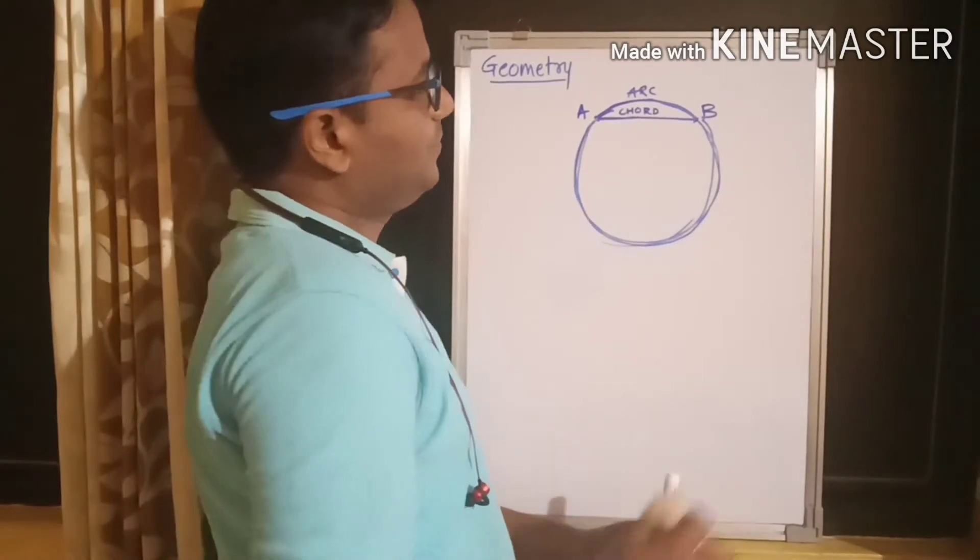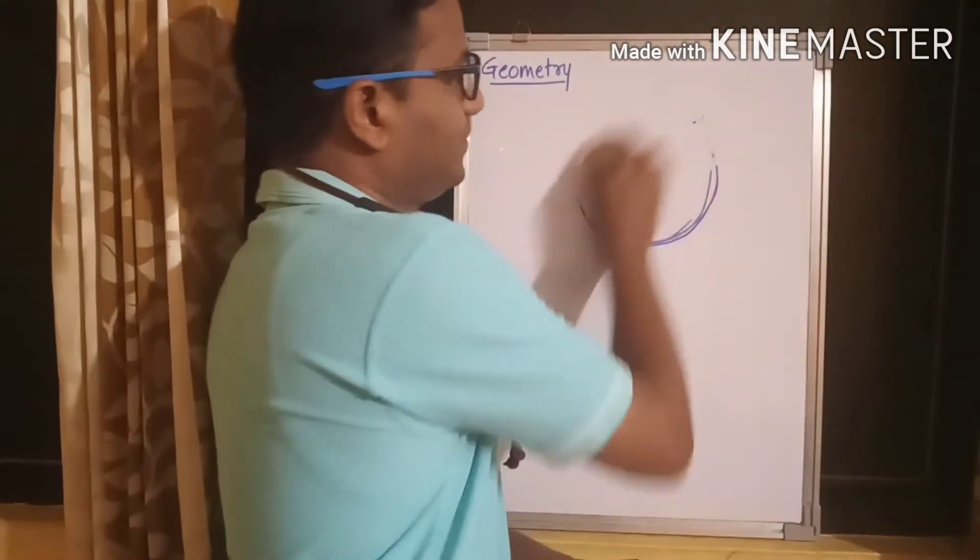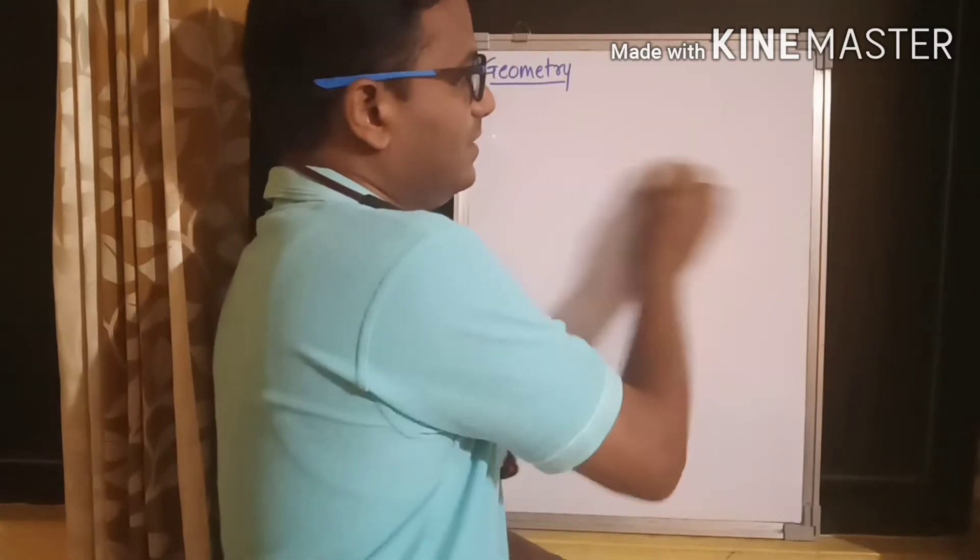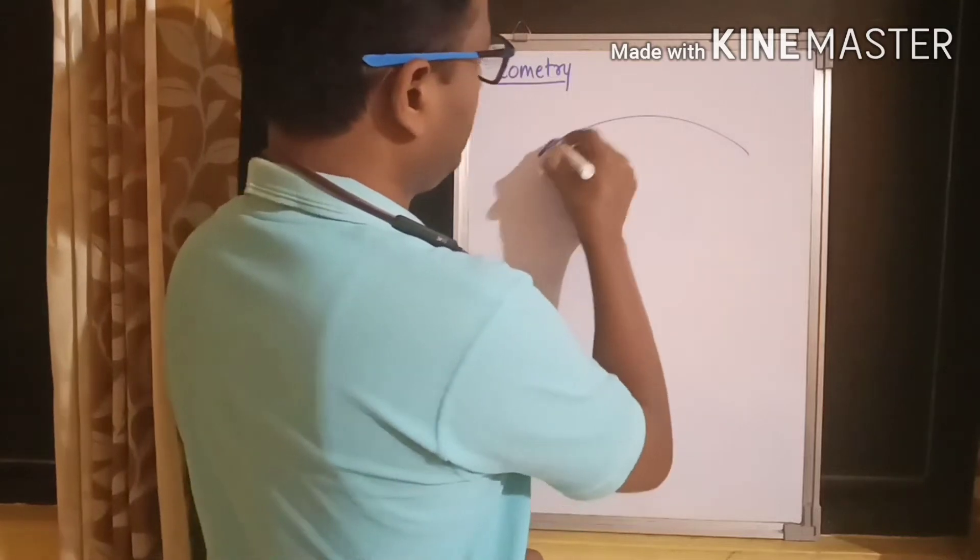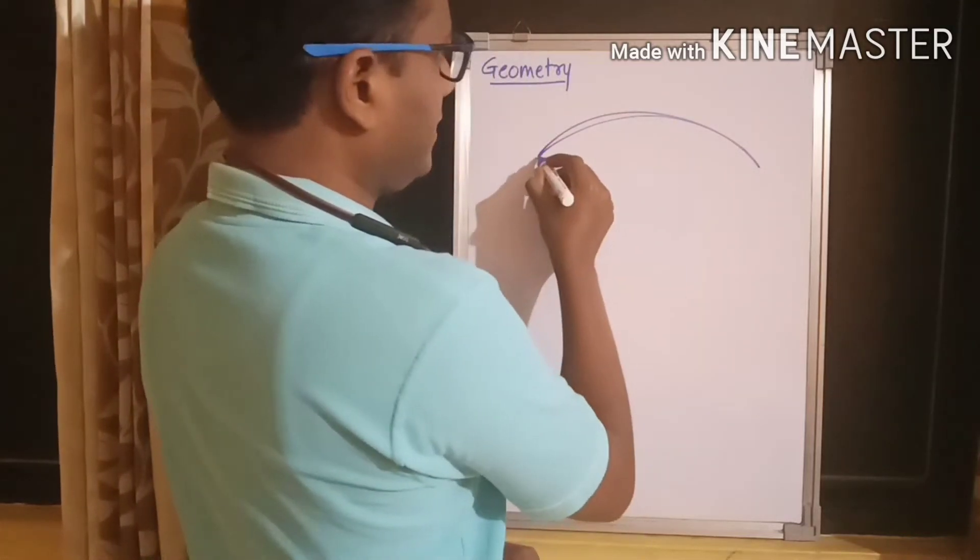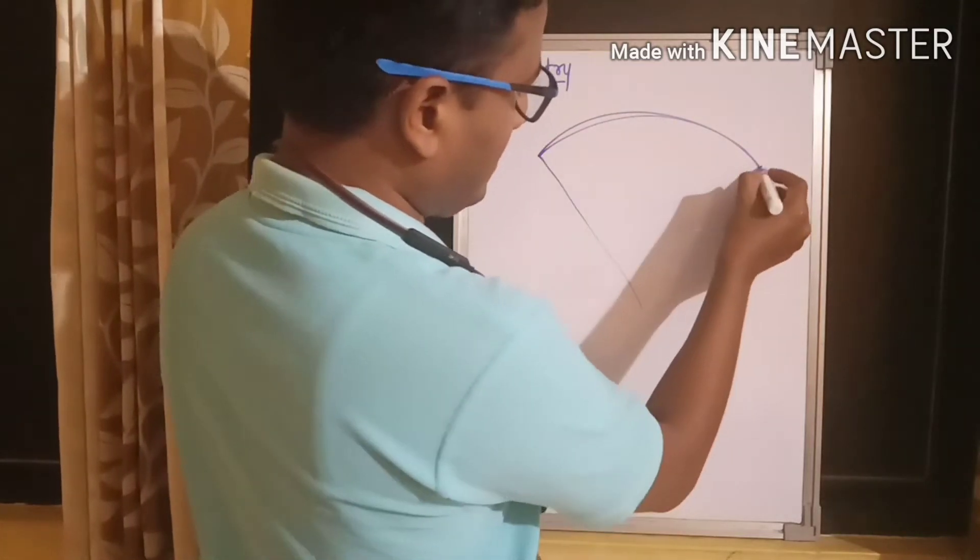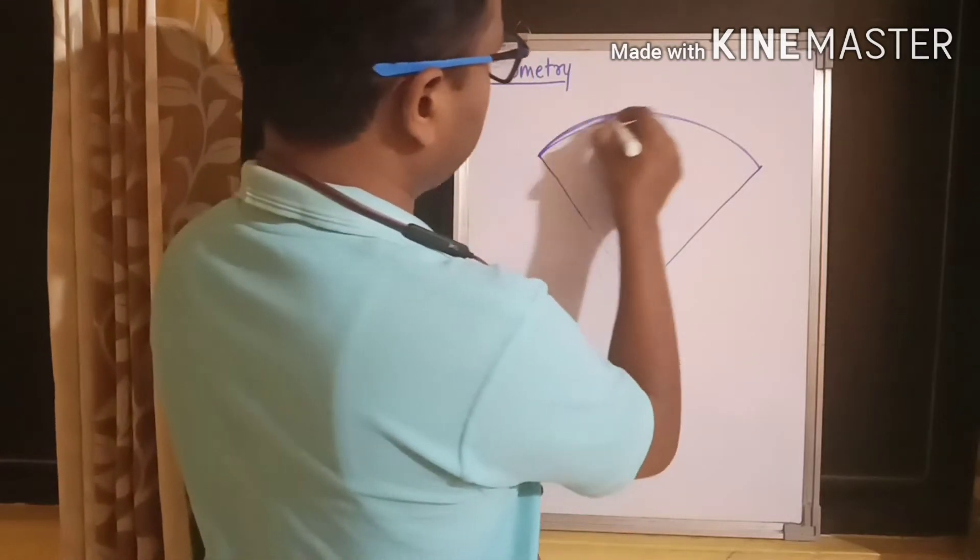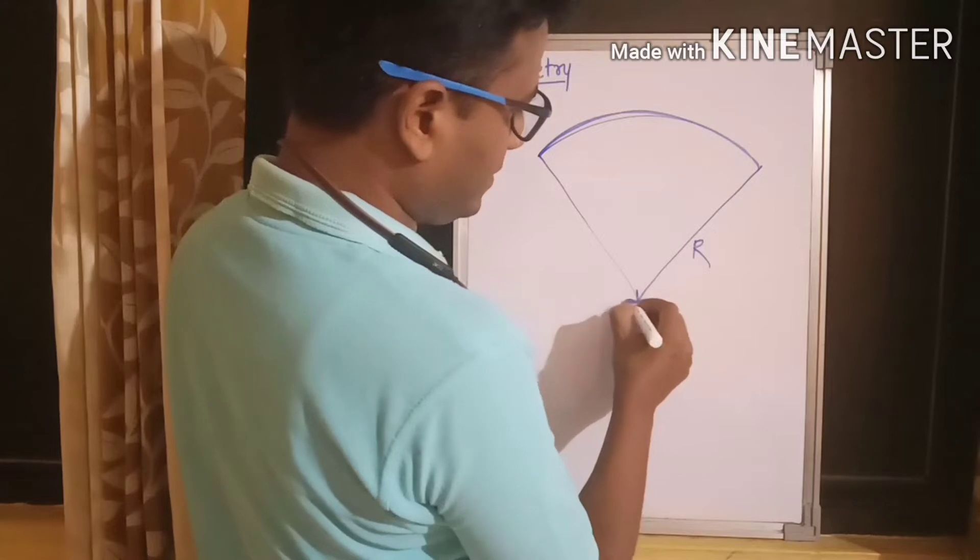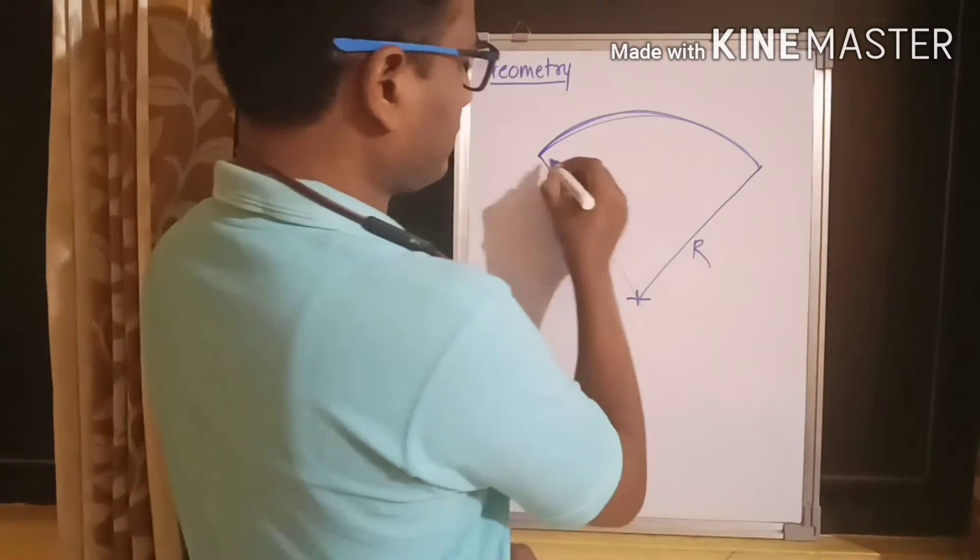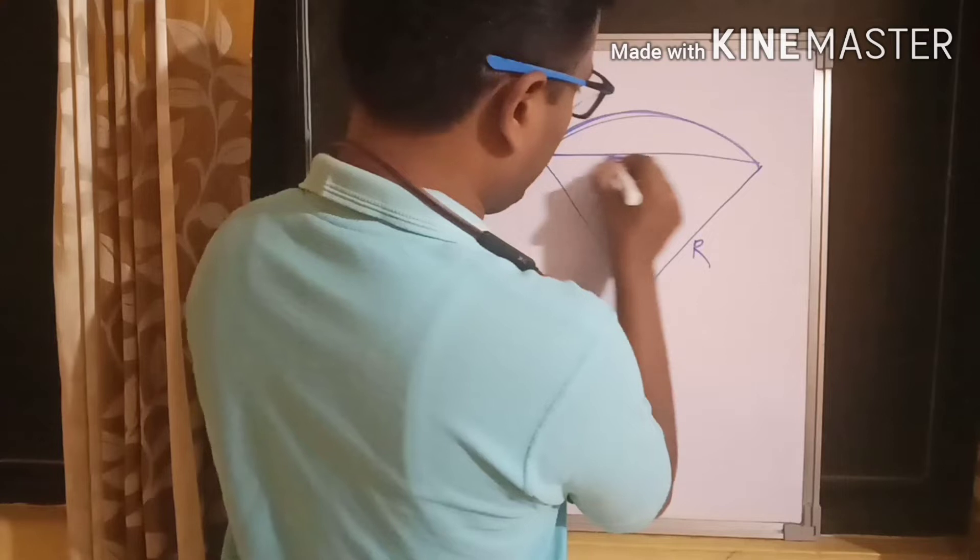Let's see. Now, we know, I'll just draw a bigger picture for understanding. Okay. This is an arc made by a radius arc. This is the center of the circle.